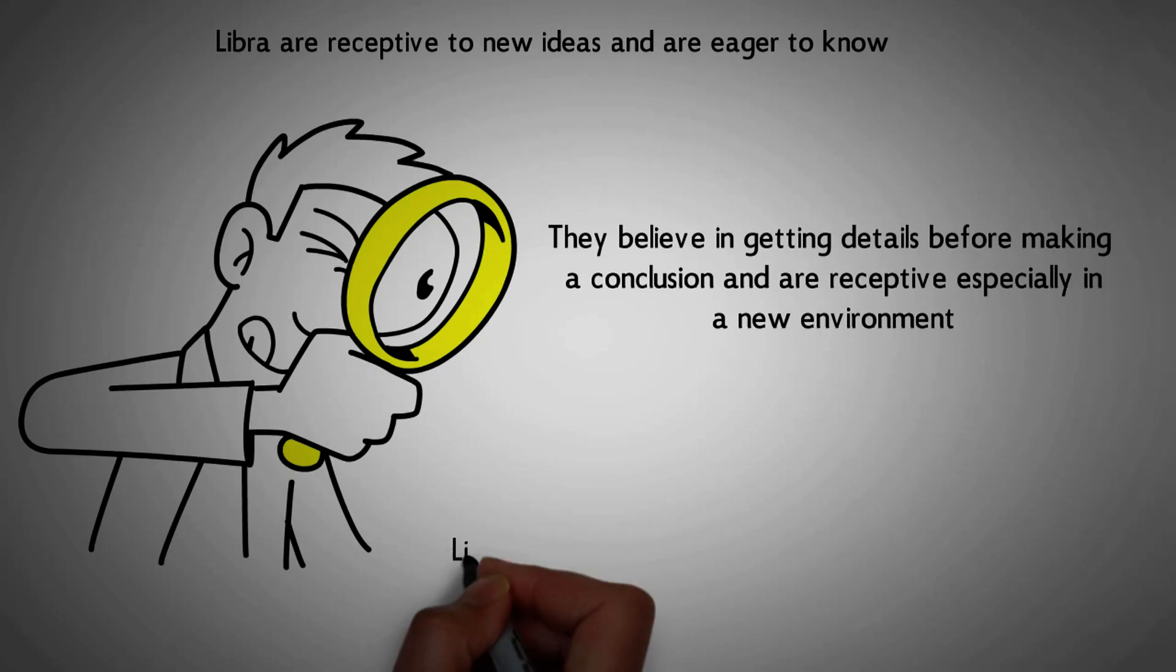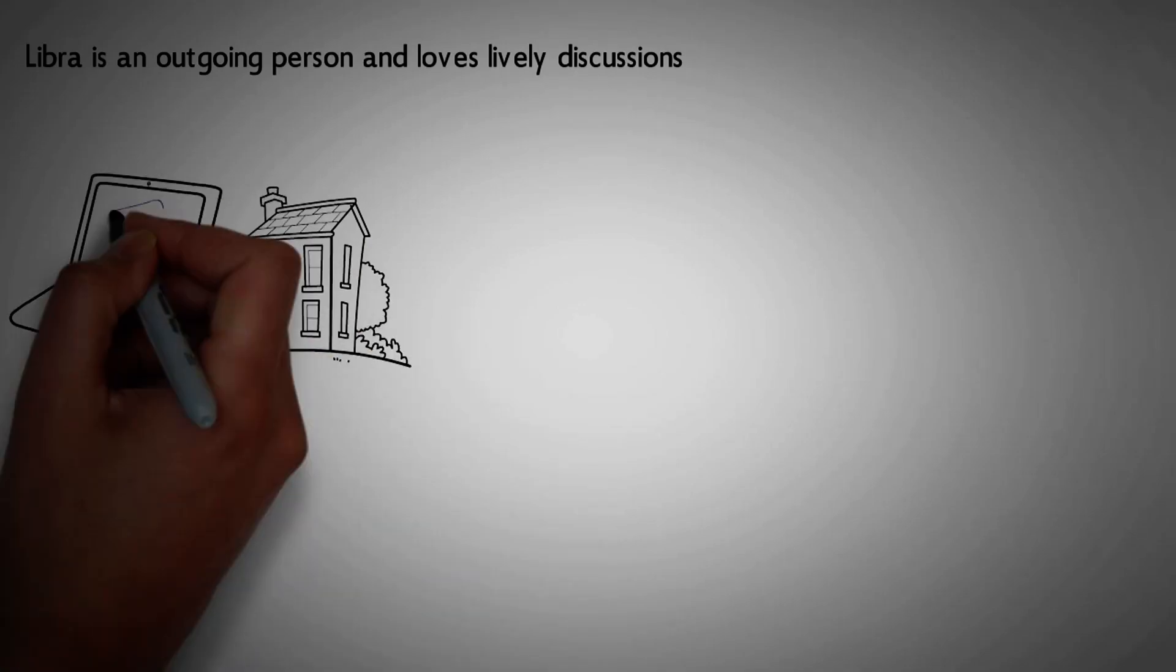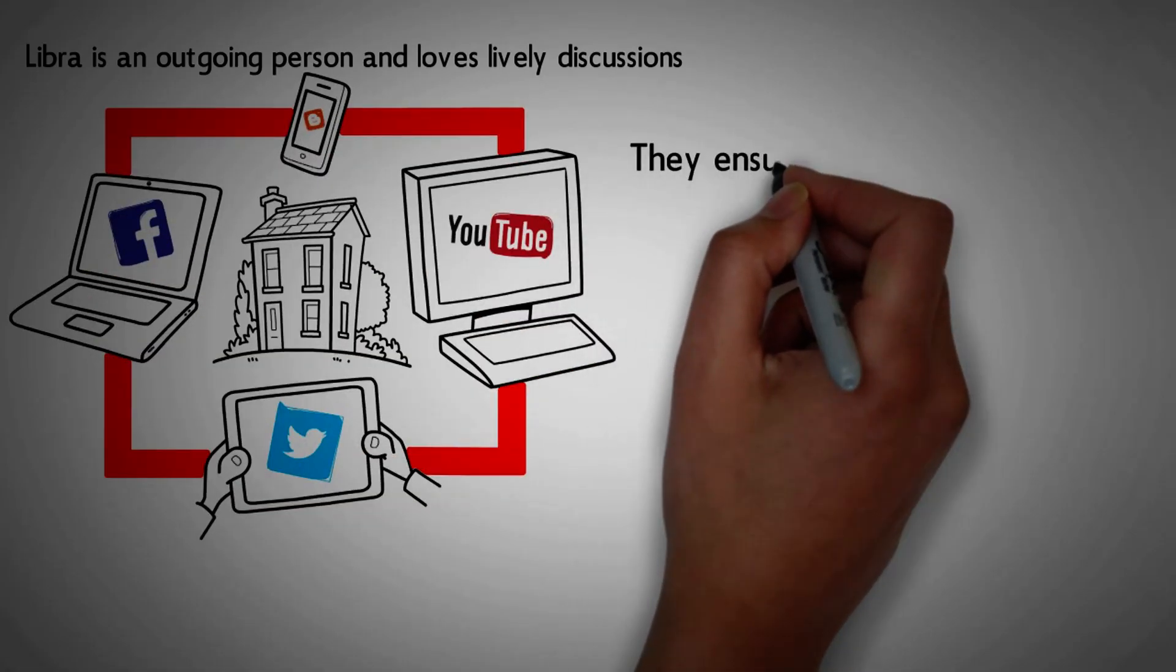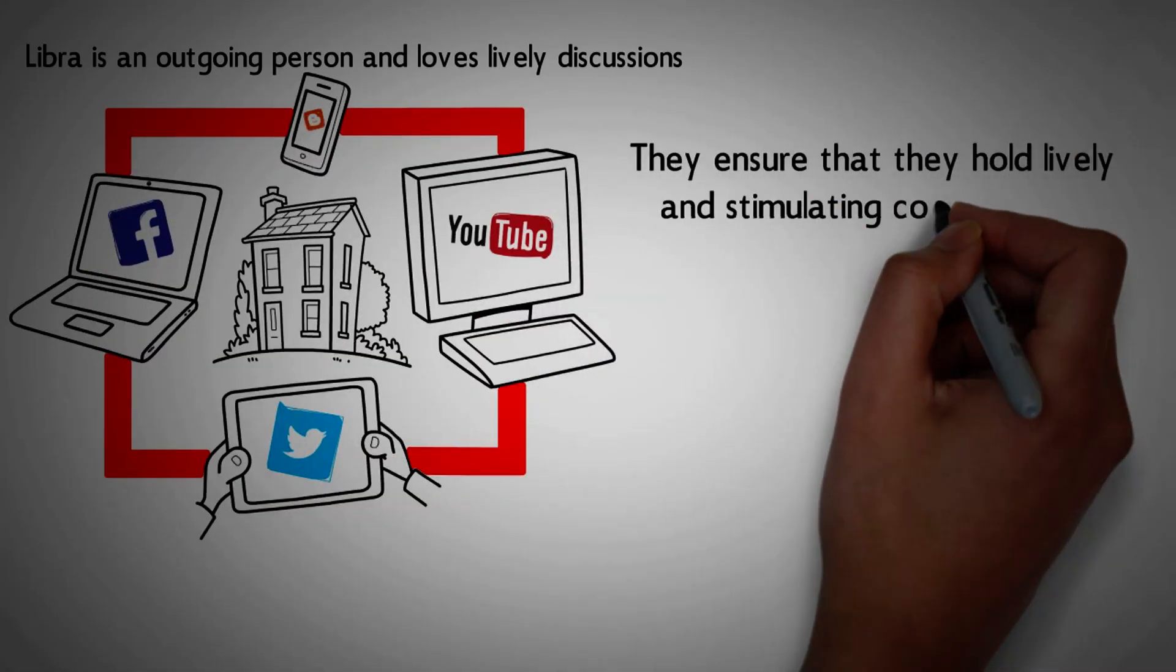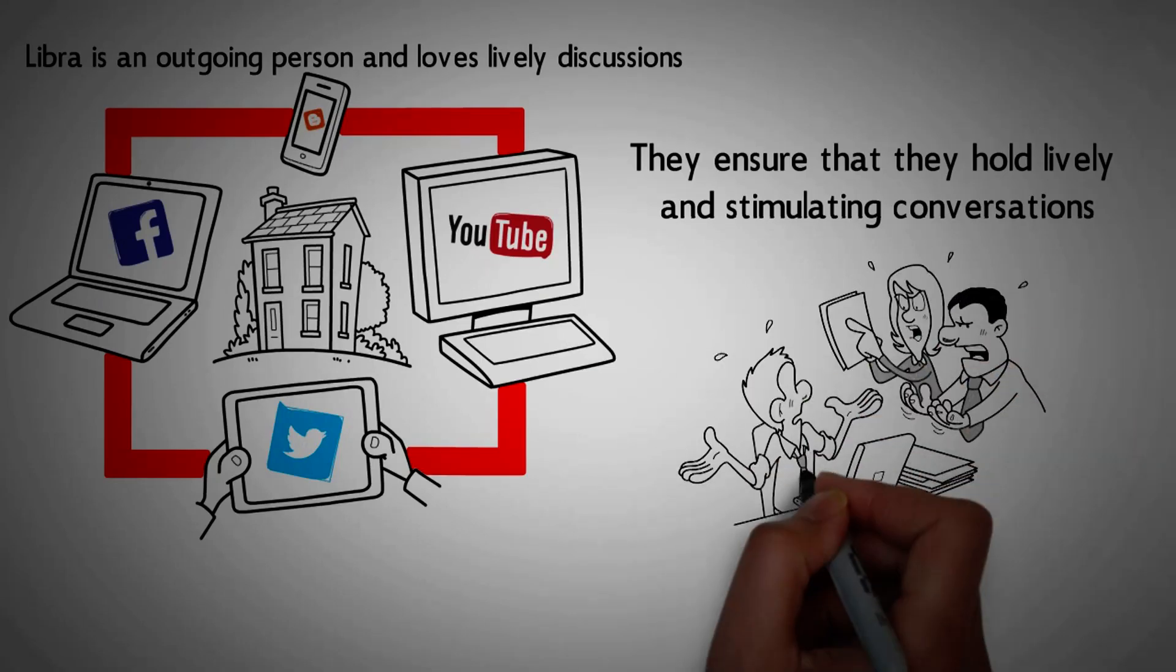Number 19. Libra is an outgoing person and loves lively discussions. Libra loves to socialize. They ensure that they hold lively and stimulating conversations. Libra also prefers discussions that help them to get away from stress and live in the moment.